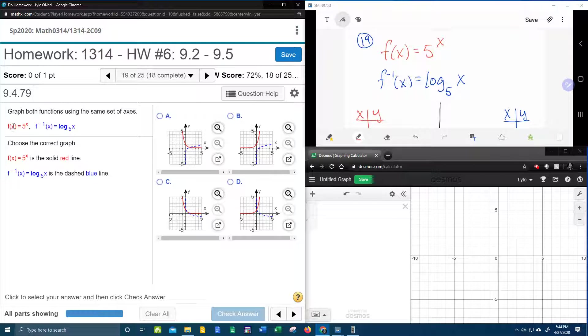It also means that once I generate ordered pairs for f of x, it's going to be super easy to get ordered pairs for f inverse. Let me show you what I mean over here.